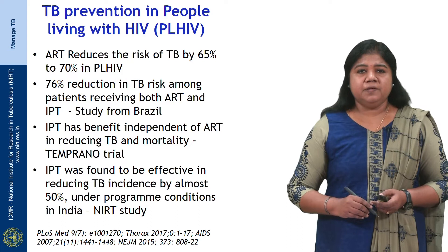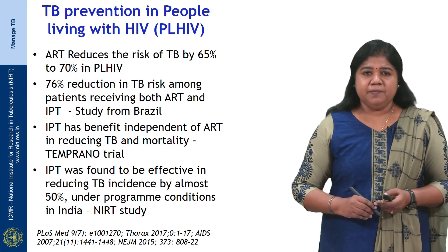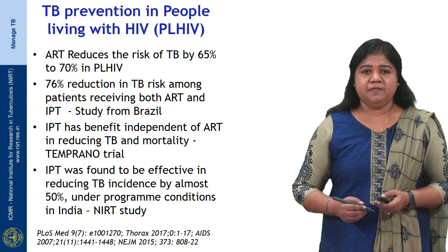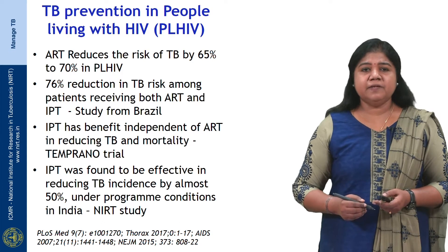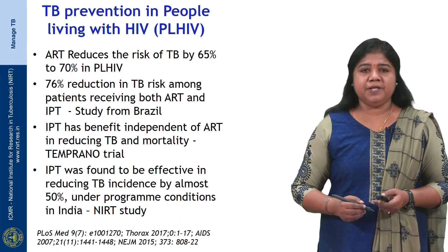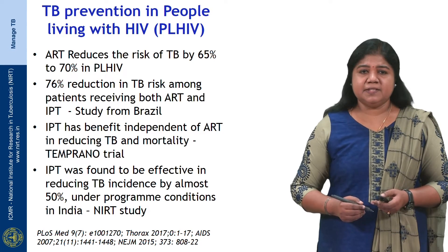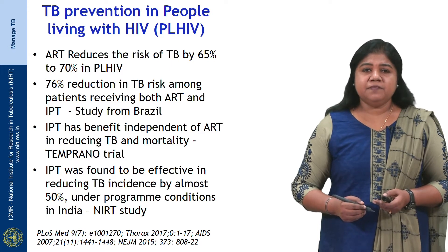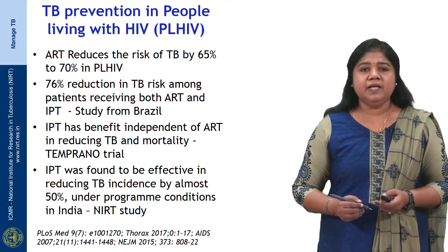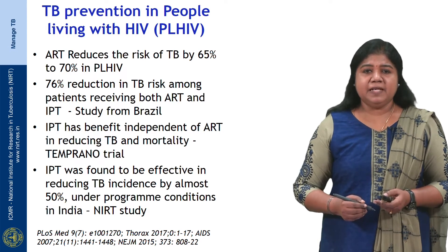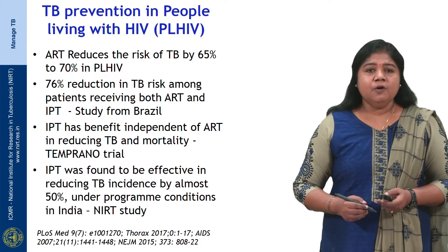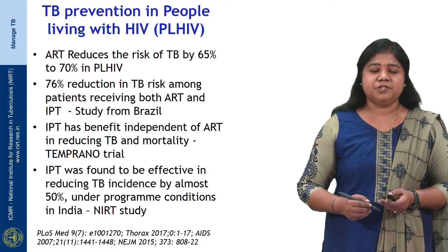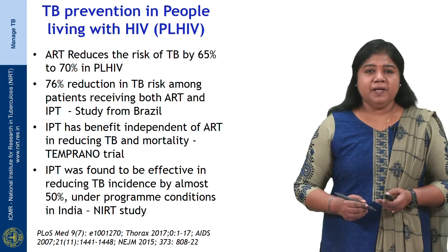Regarding TB prevention in people living with HIV: antiretroviral therapy reduces the risk of TB by 65 to 70 percent in PLHIVs. A study from Brazil showed a 76 percent reduction in TB risk among patients receiving both ART and isoniazid preventive therapy. The Temprano trial showed that IPT has benefit independent of ART in reducing TB and mortality in PLHIVs. IPT was found to reduce TB incidence by almost 50 percent under program conditions in a study from India conducted by NIRT.